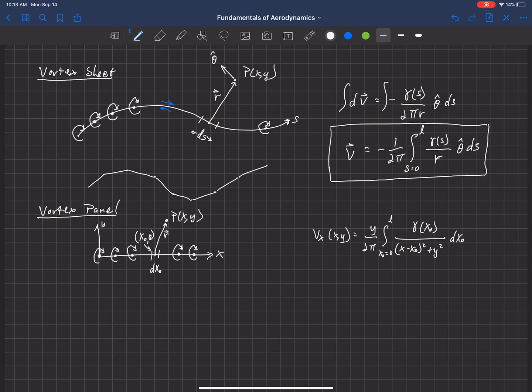And v_y at x,y is equal to -1 over 2π, the integral of x_naught equals zero up to l of (x - x_naught)γ(x_naught) over (x - x_naught)² + y², and we're integrating in dx_naught. So these equations are good for this panel.